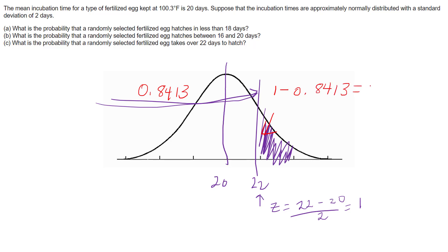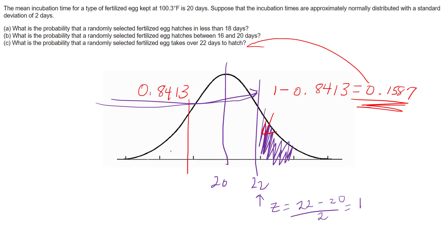We take 1 − 0.8413 = 0.1587. Notice this is the same answer as Part 1. That makes sense because of symmetry: Part 1 had z = −1 (18 days below the mean), and here z = +1 (22 days above the mean). A symmetric normal distribution produces equal tail areas.